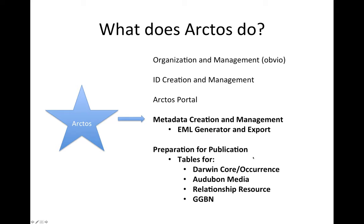As many of you know, what Arctos does in this process — the top three things — are pretty obvious: you put your data into Arctos to help organize and manage it. One of the key things Arctos does for the publication process is that it creates and manages your IDs. In Darwin Core, the critical ID is the occurrence ID, and Arctos manages both old occurrence IDs and new Arctos-assigned occurrence IDs provided to each record by the system. And of course there's the Arctos portal.